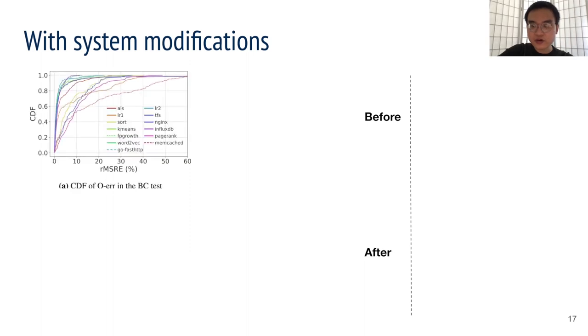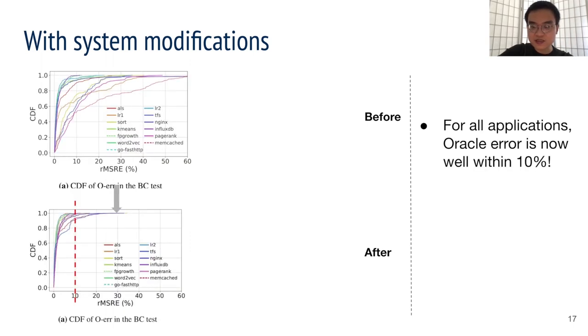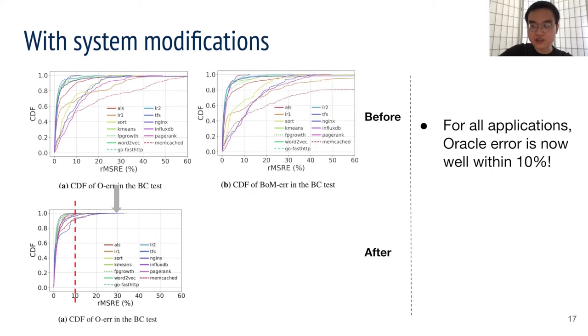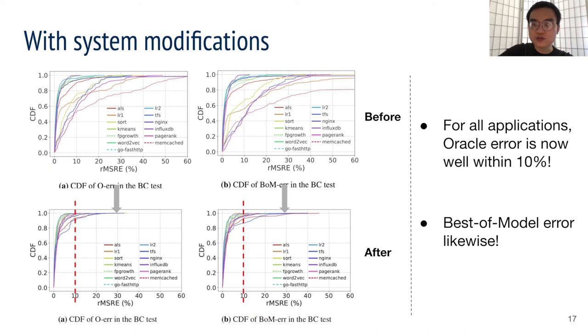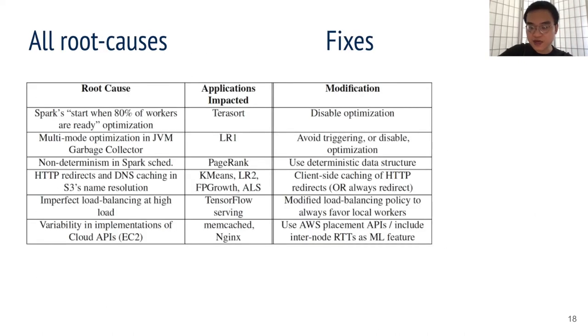These are the oracle errors we have seen before. After the fixes, all applications now have less than 10% error for at least 90% of the predictions. Likewise, for the BoM error, we can see substantial improvements. And also, BoM error tracks O error closely.